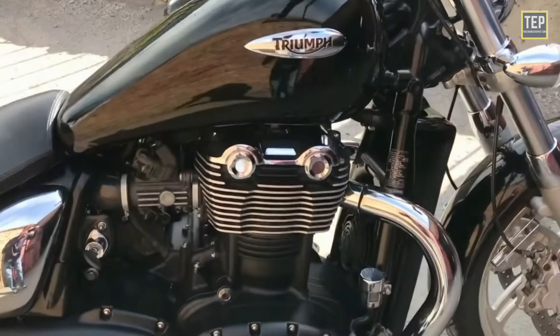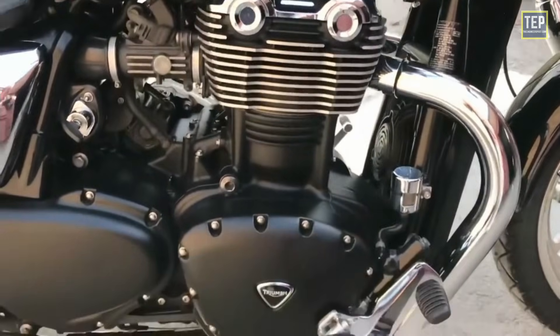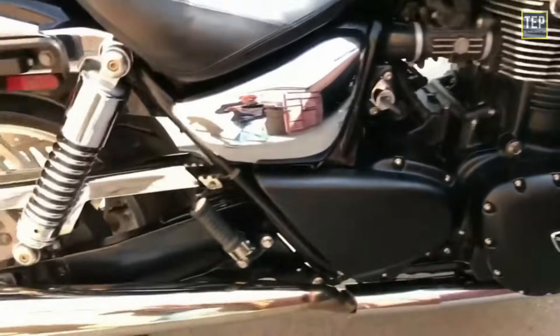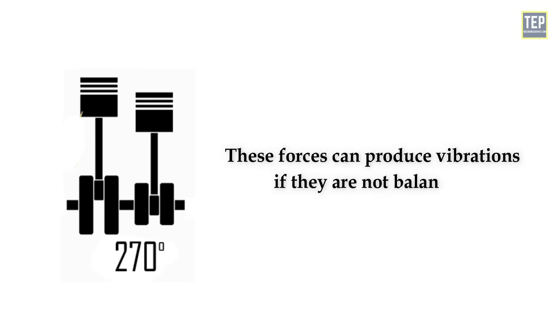Most parallel twins, all modern ones, have counterbalancers to eliminate vibrations. These forces can produce vibrations if they are not balanced.